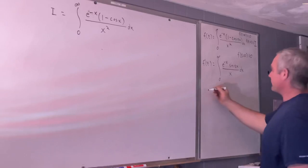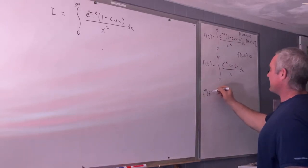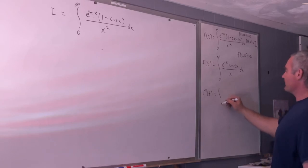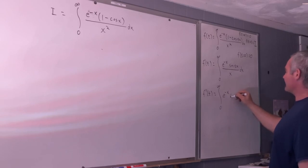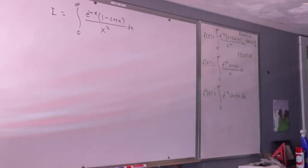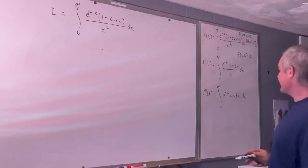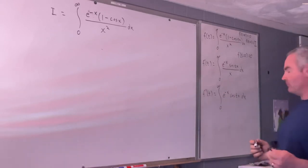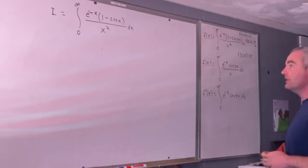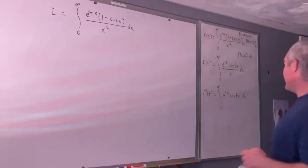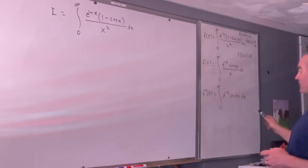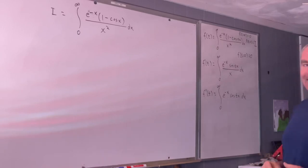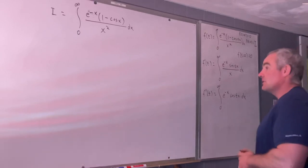We're going to do this one more time and take f''(t) using the same method. That's going to be equal to the integral from 0 to infinity of e to the negative x cosine(tx) dx. This is where my solution diverges slightly from his — he used Euler's formula to solve this, and I am going to be using the normal method of integration by parts. Since he did it that way, I'm going to just use integration by parts.